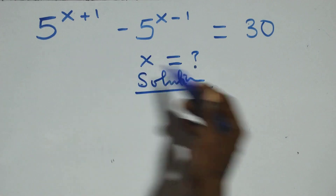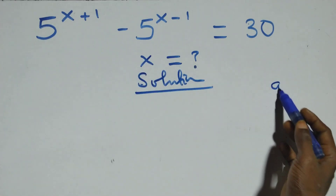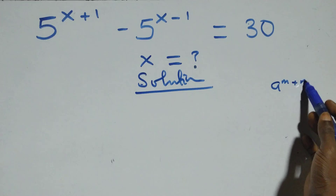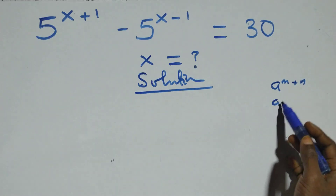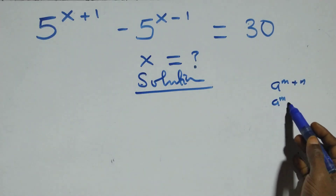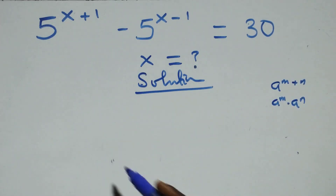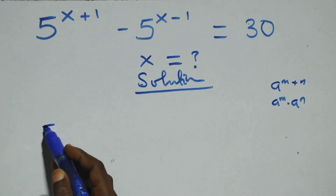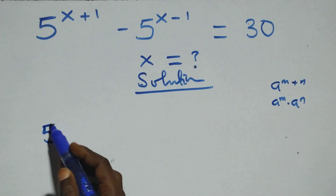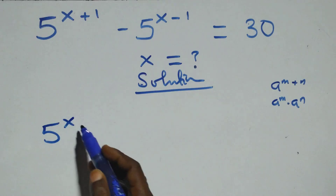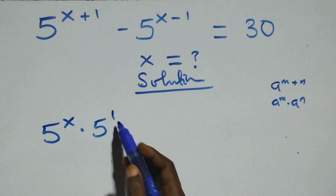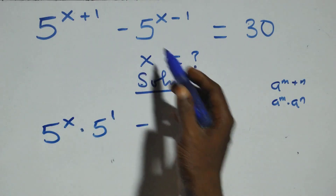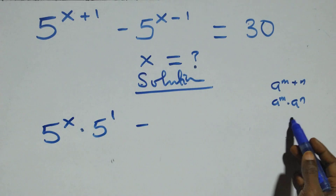What we have here: this follows when we have a raised to power n plus m — this is the same thing as a raised to power n times a raised to power m. For this equation, we have 5 raised to power x times 5 raised to power 1.